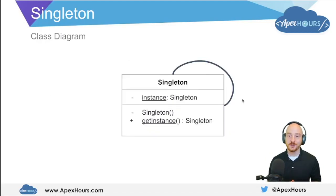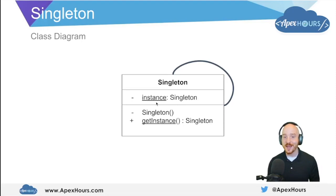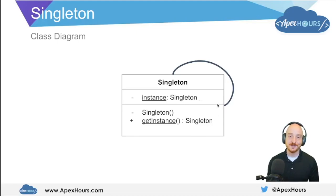Here we have the singleton pattern itself in a class diagram. It's actually pretty simple and straightforward because there's only ever one class within the singleton. The pure singleton pattern implementation — remember that this line here is an association, so we read this as the singleton class has a singleton. We have a private static instance variable called 'instance' that is of type Singleton, then we have a private constructor and a public static method called 'getInstance' which returns that instance variable of Singleton.